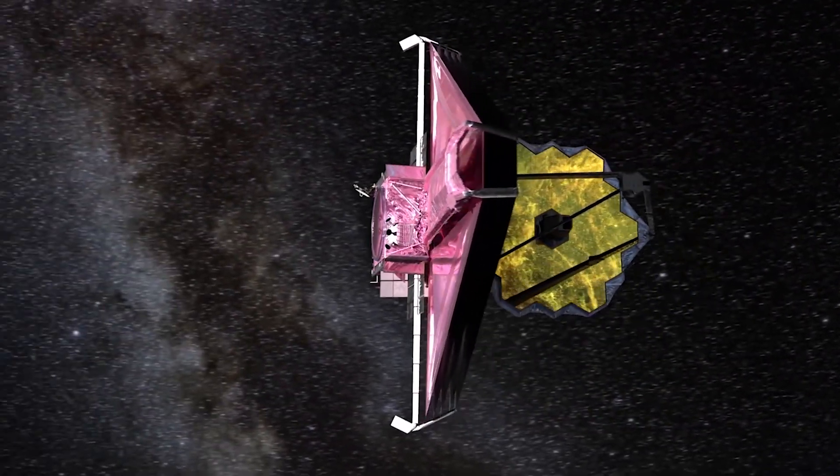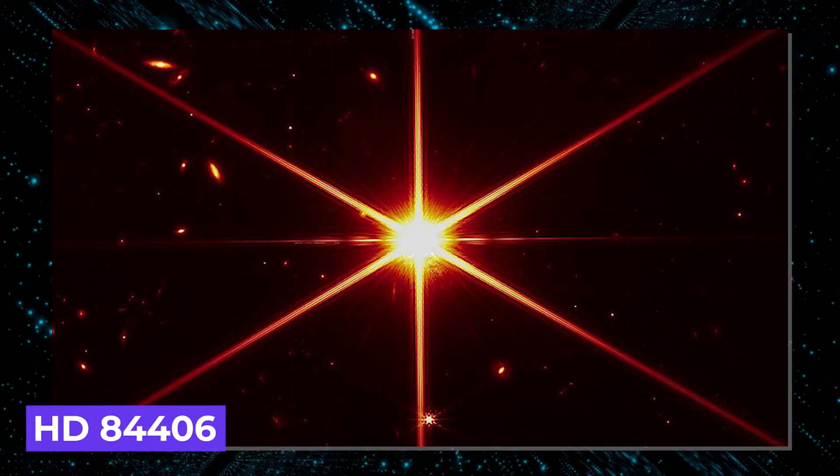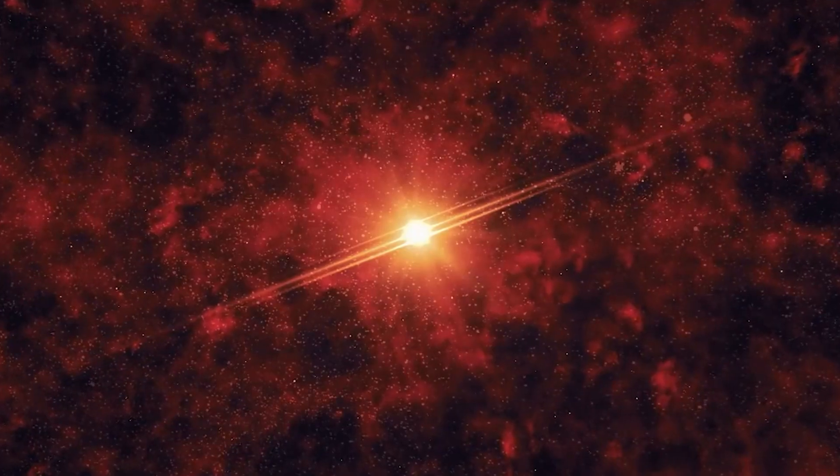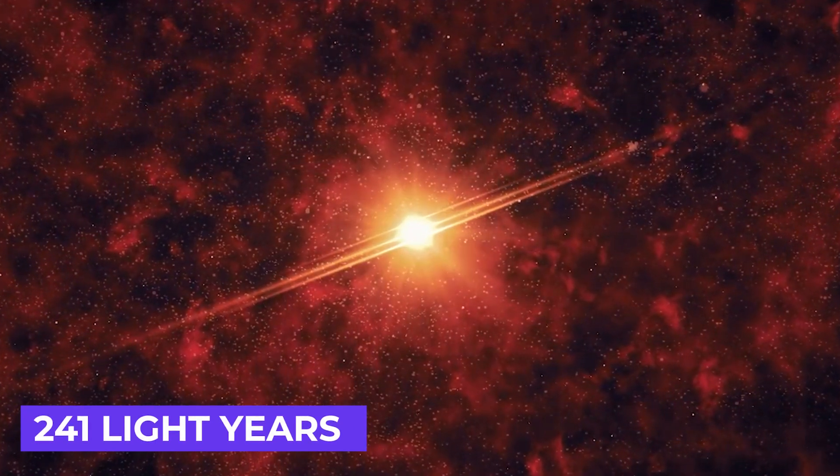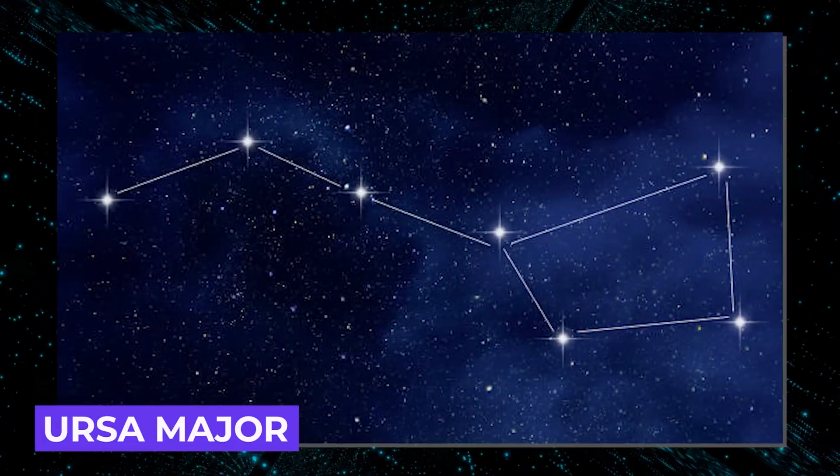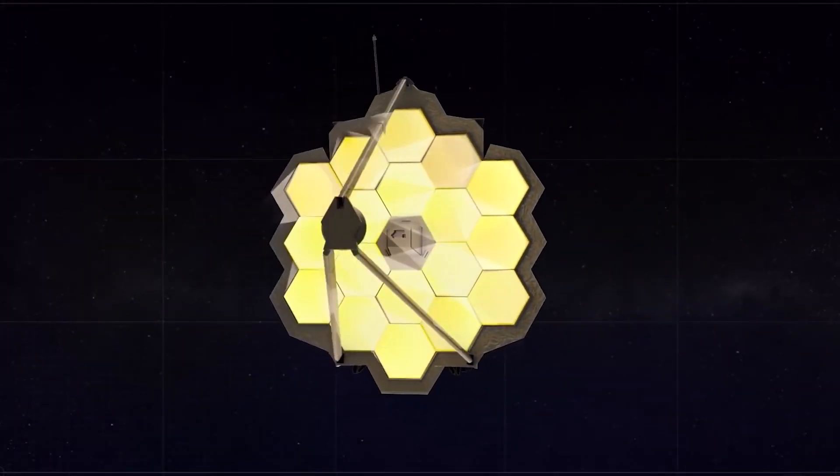The first image of space from the JWST was of HD 84406, a sun-like star located approximately 241 light-years away in the constellation of Ursa Major. The image showed a mosaic of 18 stars spread over a black background, however this was a trick image, which appeared in 18 places because the 18 segments of the James Webb telescope were yet to be aligned at the time.